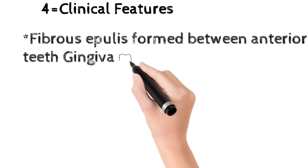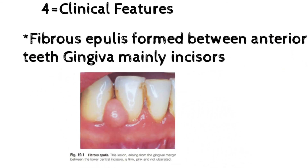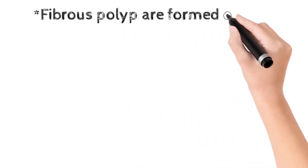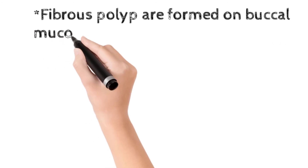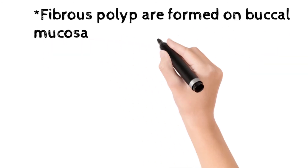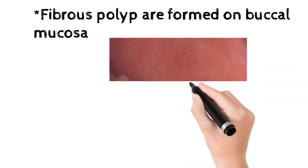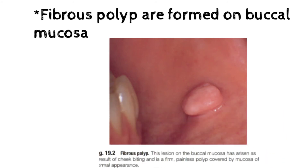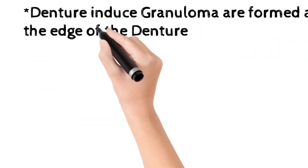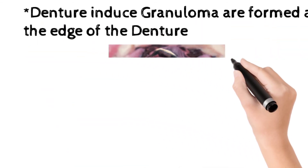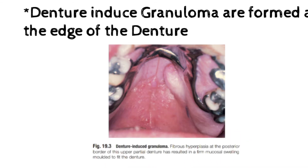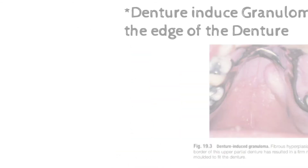In clinical features, fibroepulis is formed between the anterior teeth at the gingival margin, mainly at the incisors. Fibrous polyp is found on the buccal mucosa. Denture-induced granuloma is formed at the edge of the denture, as seen here in the removable partial denture — it is mainly due to overextension of the denture.